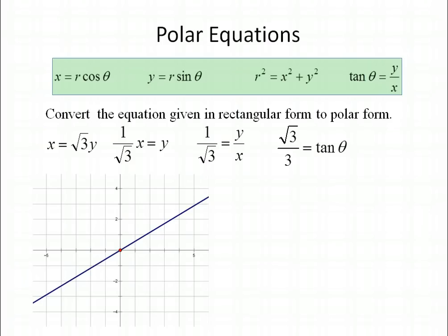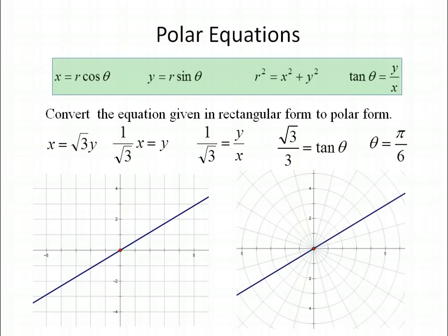Now I also rationalize 1 over the square root of 3. We want to isolate theta — we want everything in terms of theta or r, getting rid of the x's and y's. So we take the arctangent of the square root of 3 over 3 and get theta equals pi over 6. On the polar grid, that means you want all the points on the line pi over 6, giving you the exact same line we had on the rectangular grid.